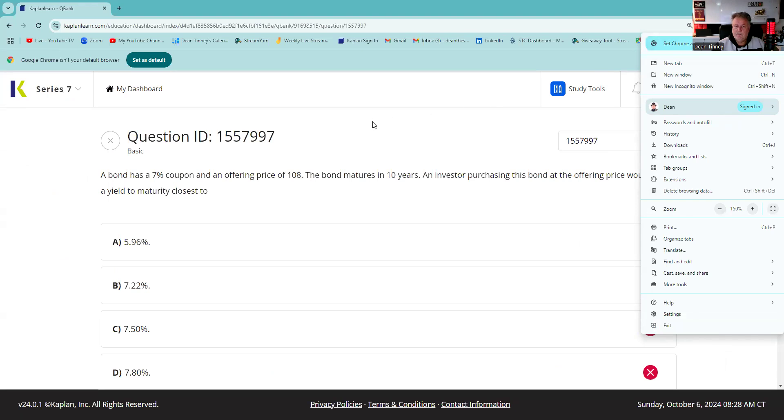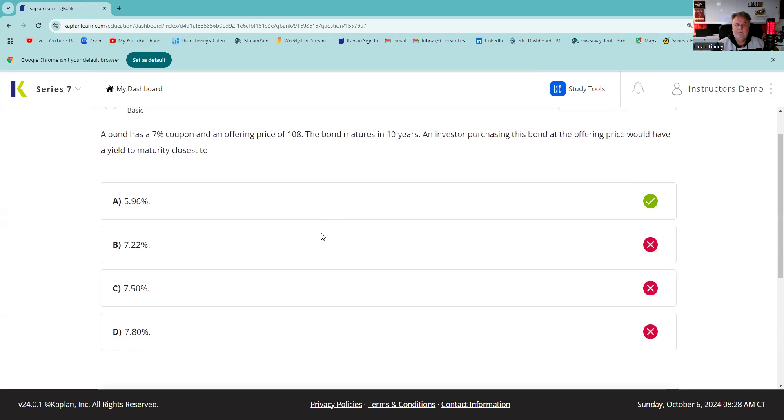And for that commercial, Kaplan allows me to give you a free look on Kaplan content like this. A bond has a 7% coupon, offering price of 108. The bond matures in 10 years. An investor purchasing this bond at the offering price would have a yield to maturity closest to.